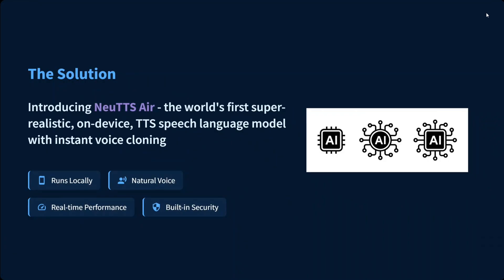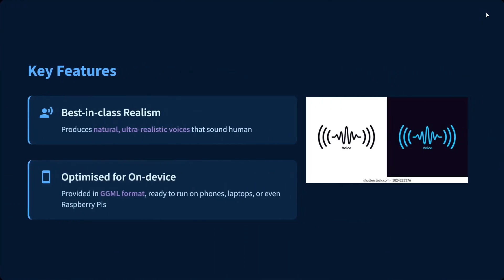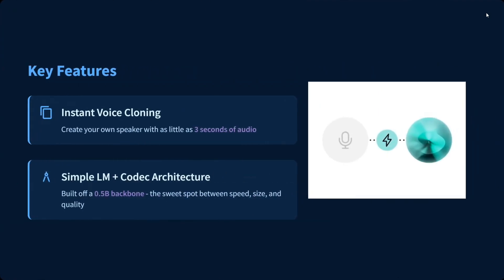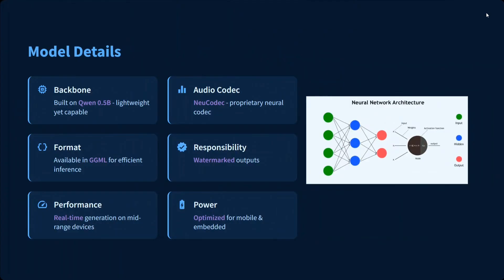What are the key features? Best-in-class realism — we just heard some samples and they were great. Optimized for on-device use, it is provided in GGML format and runs on phones, laptops, Raspberry Pi, and more. Instant voice cloning is supported. It uses a simple LM-plus-codec architecture and a 0.5B Qwen model — the sweet spot between speed, size, and quality. You can create your own speaker with less than three seconds of audio for voice cloning.